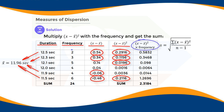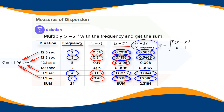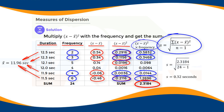The squares are: 0.54 squared is 0.2916, 0.34 squared is 0.1156, 0.14 squared is 0.0196, and negative 0.46 squared is 0.2116. Multiplying each squared value by its frequency: 2 times 0.2916 is 0.5832, 3 times 0.1156 is 0.3468, 4 times 0.0036 is 0.0144, and 6 times 0.2116 is 1.2696. The sum of all these products is 2.3184.